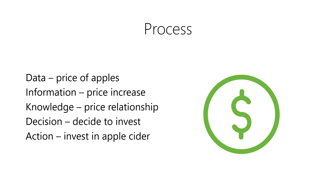Finally, if everything worked out in our favor and the price of apple cider rises as predicted, we will have achieved our goal of capturing a profit on our investment. However, achieving our goal is entirely dependent on having correct data, information, knowledge, decisions, actions, and the apple cider market working in our favor. While this has been an overly simplified example of how data-driven decision-making works, hopefully it helped to demonstrate how we use data to achieve a goal with data science.